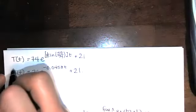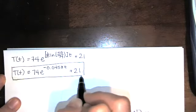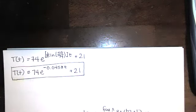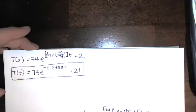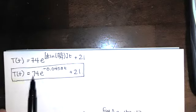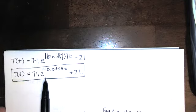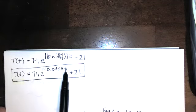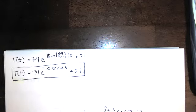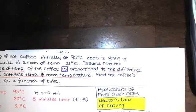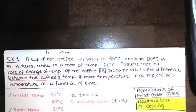Now we can say what the temperature is at any time — after two minutes, ten minutes, or half an hour. If somebody asks for the temperature after a really long time, we ask for the limit as t goes to infinity. As t → ∞, the exponential with a large negative power goes to zero, so the temperature of the coffee approaches 21 degrees Celsius, which is exactly what we would expect because that's room temperature. That's how we solve that problem.